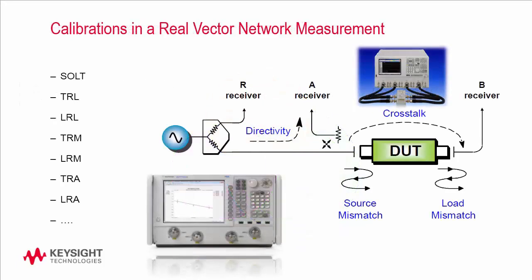If you've done real vector network measurements, you know that there are many types of port calibration methods, such as TRL, TRM, SOLT, etc. The calibration is all about parasitic removal at the port interface from the data you measured. Different types of calibration methods can be applied based on the frequency of interest, the feed structures, as well as the location of reference planes. Similarly, Momentum ports also have different calibration techniques, which are specially developed for certain cases and applications.